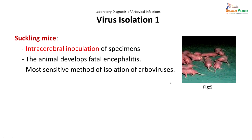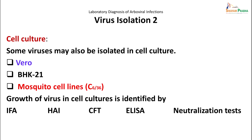Virus isolation can be done in suckling mice by intracerebral inoculation, and the animal develops fatal encephalitis — this is the most sensitive method of isolation of arboviruses. One could also do virus isolation in cell culture using Vero cell line, BHK-21 cell line, or mosquito cell lines. After inoculation and virus growth in these cell lines, the virus can be detected by immunofluorescent assay, hemagglutination inhibition assay, complement fixation ELISA, or neutralization test.